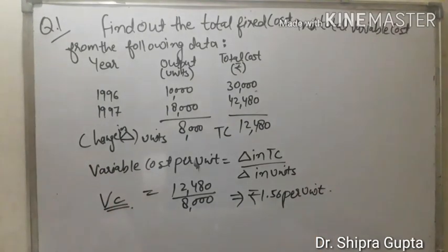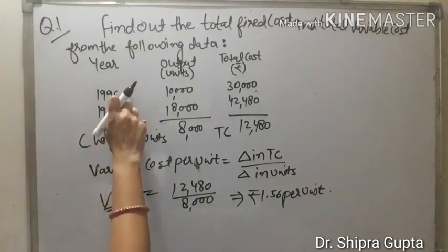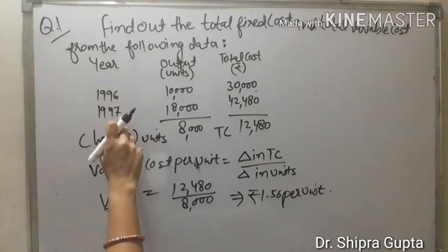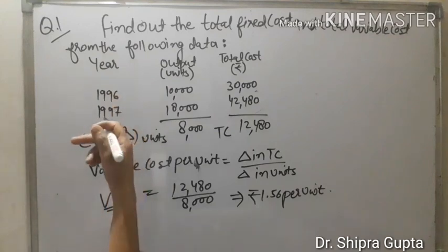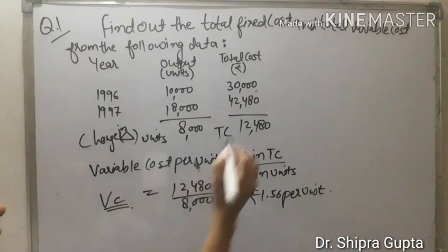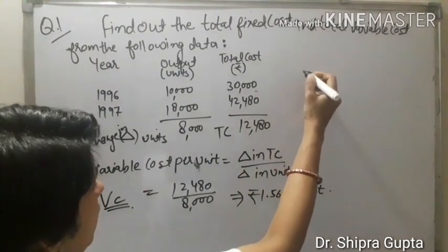Now we will calculate fixed cost. We will take any year data, 1996 or 1997. We will prove by taking both data. First, we will take 1996 data.